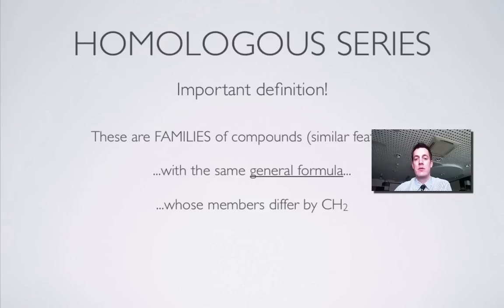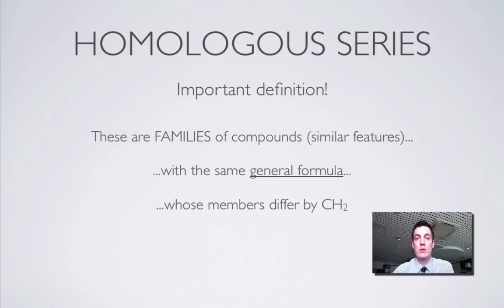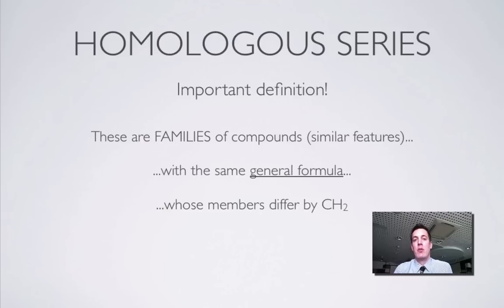First of all, what do we mean by homologous series? This is quite an important definition to learn. A homologous series is basically a family of compounds that all have similar features — it's a group of compounds. All those compounds in the homologous series have to have the same general formula, and one member of the group will differ from the next member in turn by a CH₂ group, and we'll see what that means in just a moment.